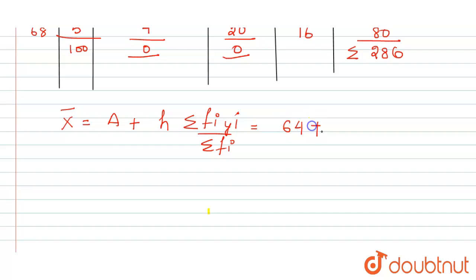So the value equals to assumed mean we have taken, that is 64, h is 1, and summation of fi yi was initially 0. So here we can see that by assumed mean method, the value of mean equals to 64.